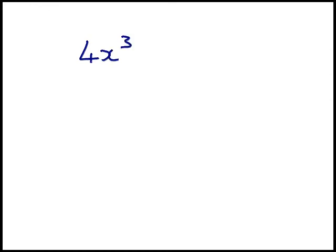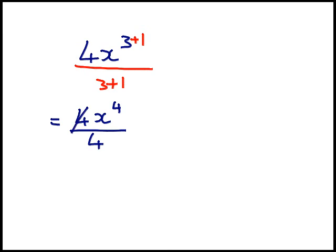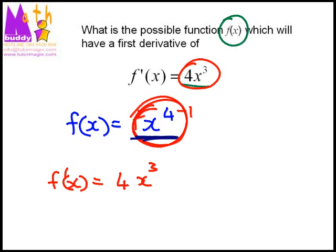You add 1 to the exponent, and you divide that whole expression by that new exponent, namely 3 plus 1, which will then give us 4x to the power of 4, over 4, the 4's cancel, and we would be left with x to the power of 4, which is what we said the original function would be.